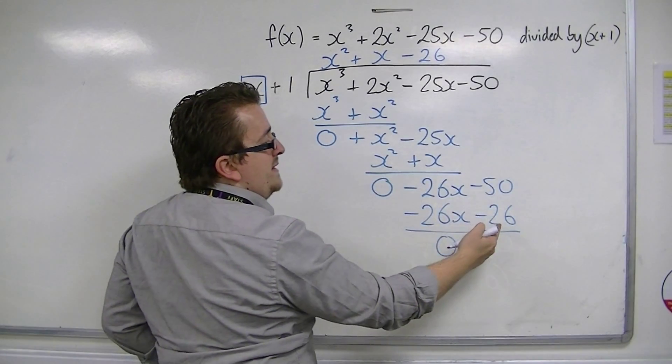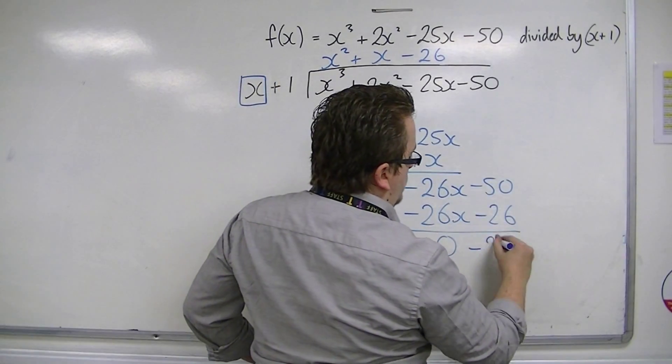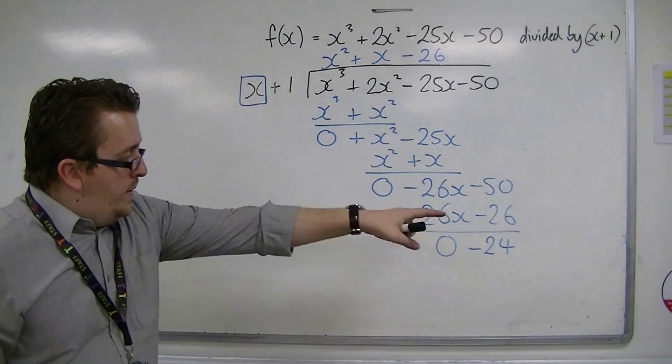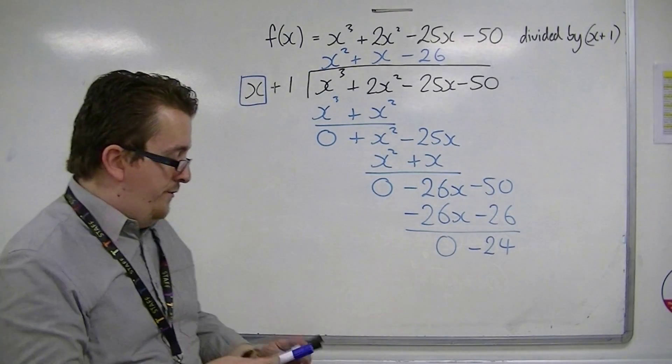Minus 50 take away minus 26 is minus 24. So we have a remainder, this time, of minus 24.